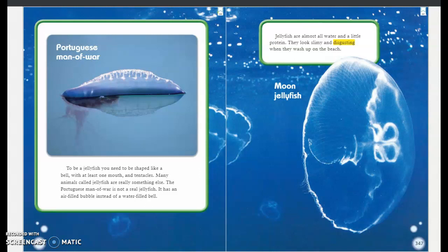Portuguese Man of War. To be a jellyfish, you need to be shaped like a bell, with at least one mouth and tentacles. Many animals called jellyfish are really something else. The Portuguese Man of War is not a real jellyfish. It has an air-filled bubble instead of a water-filled bell.